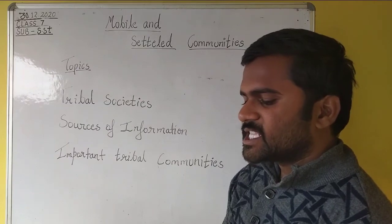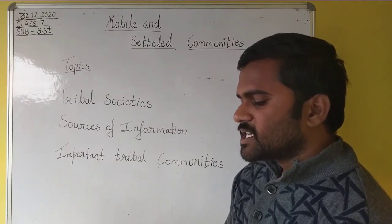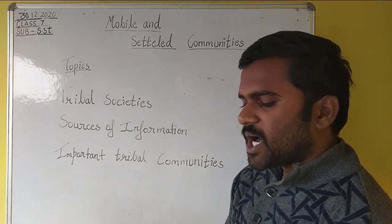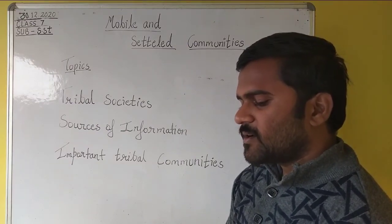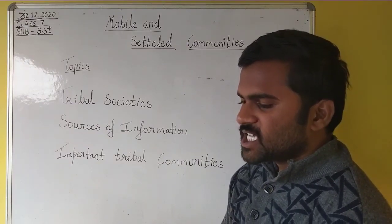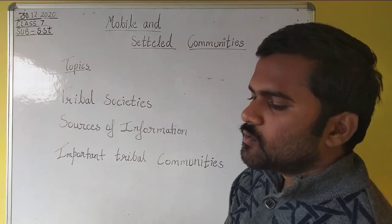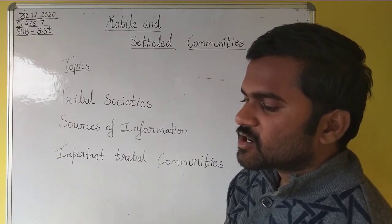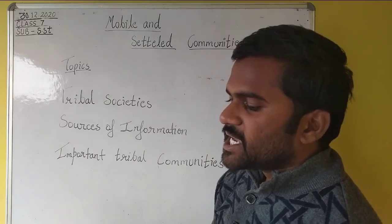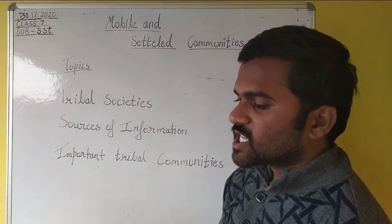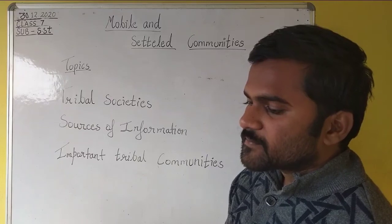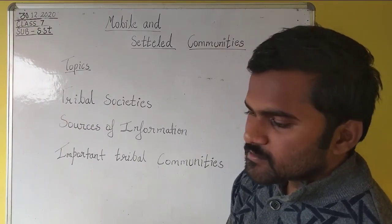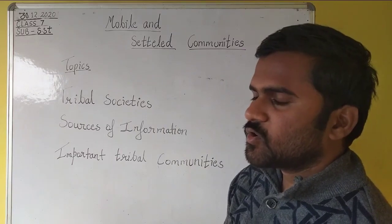Even today we can see in many parts of India nomads with their herds of animals. Some of the nomads were essentially pastoral tribes. They survived on milk products and exchanged ghee, wool, etc. with farmers for grain, cloth, and utensils. They also transported food grain on their bullocks for armies. The Gaddis and Gujars were examples of such nomads.